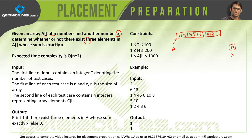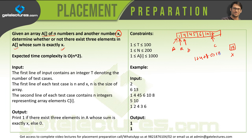Now determine whether or not there exist three elements in the array whose sum is exactly equal to x. We have to find out whether there are three elements inside this array that sum to 13. For example, if we take 1, 4, and 8 — adding 1 plus 4 plus 8 gives 13. So we need to find any three numbers whose sum equals x.